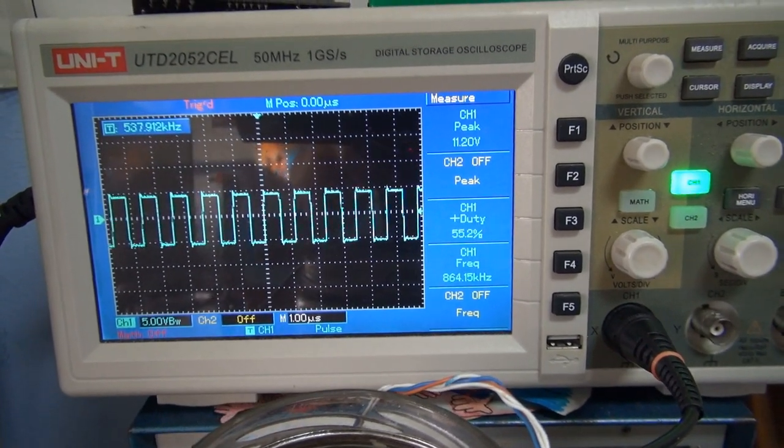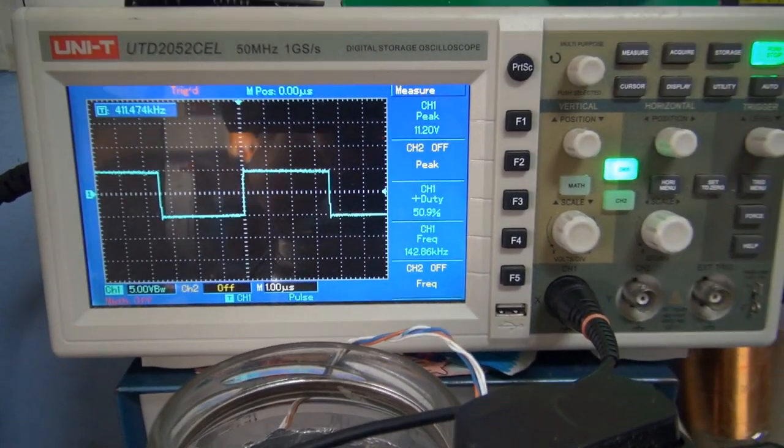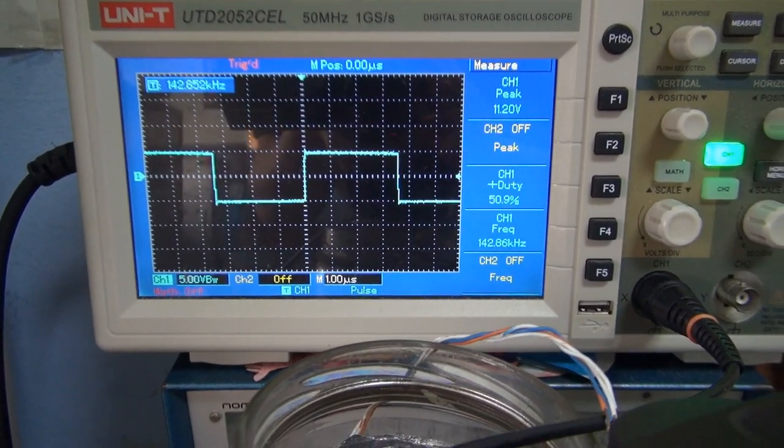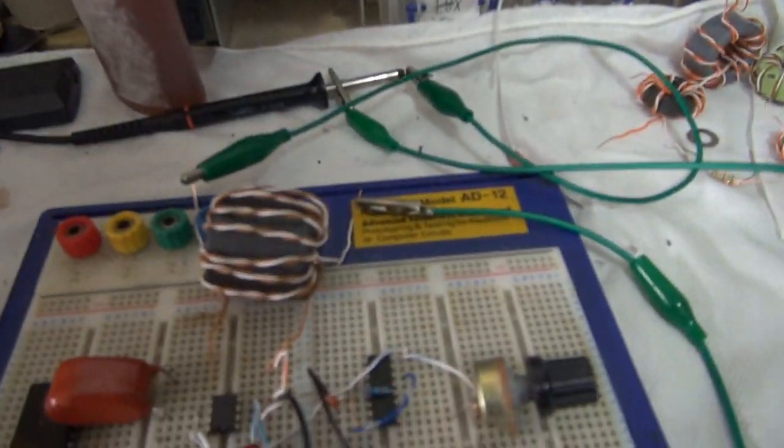Goes up to about 864 kHz. And now we're down at 142 kHz, and yeah, that's looking really good. So actually, I might use that as my gate drive transformer core.